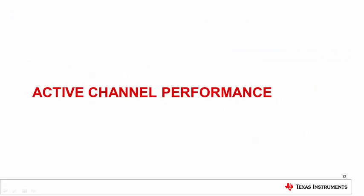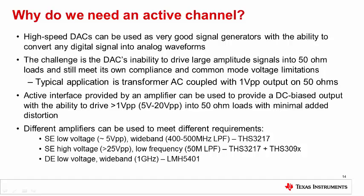The next few slides will cover the performance of the three active channels. First, let's answer the question of why an active channel is needed. High speed DACs are very good at converting digital patterns into analog voltages at very high speeds, however they are not very good at driving loads with high amounts of current. Typically a DAC is terminated with an output transformer and is only capable of driving 1 volt peak to peak on a 50 ohm load. Active interfaces allow the DAC to be DC coupled, which is not possible with a transformer, and also provides a means to provide an output signal greater than 1 volt. In most cases a signal generator may be needed to provide a 5 to 20 volt signal amplitude depending on the application.